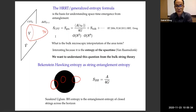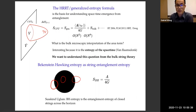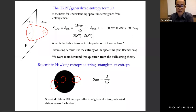We want to ask the question: what is the bulk microscopic interpretation of this area term? It's an interesting question because we think it is giving us the entropy of the spacetime itself rather than some fields on top of it. In particular, we want to understand this question from the point of view of the bulk string theory.